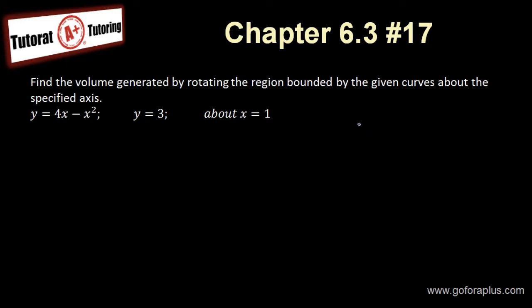So let's start by drawing a little graph. I know that 4x minus x squared is a quadratic function, and I know that y equals 3 is a horizontal line. So I need to know where is the intersecting point. I know that this function is going upside down like this. So I know that I need to find the two intersecting points.